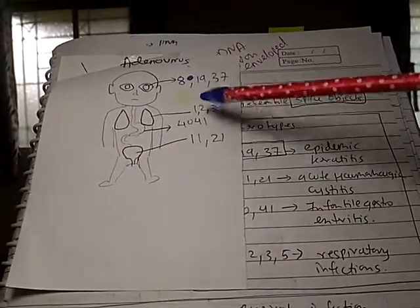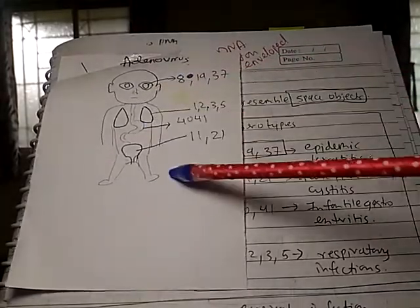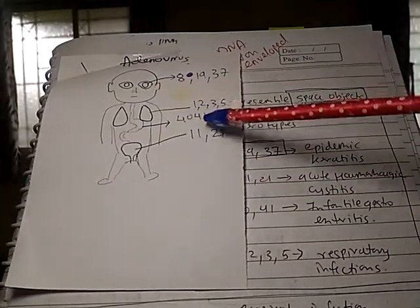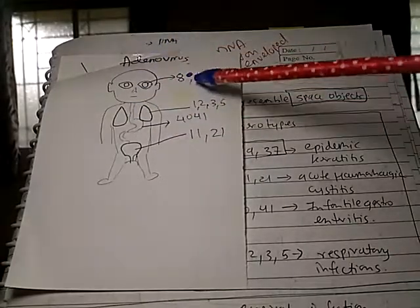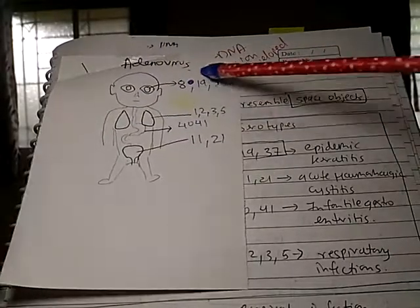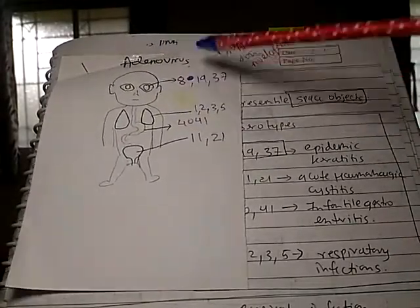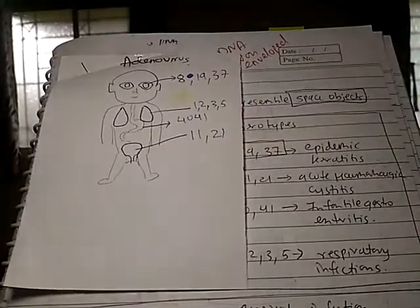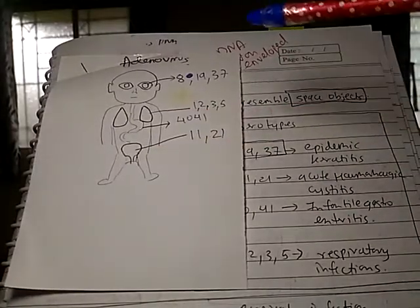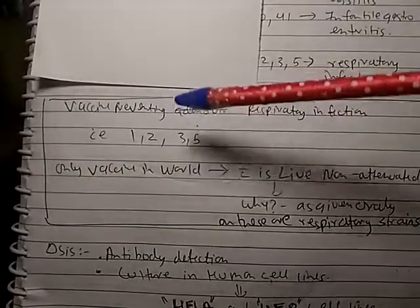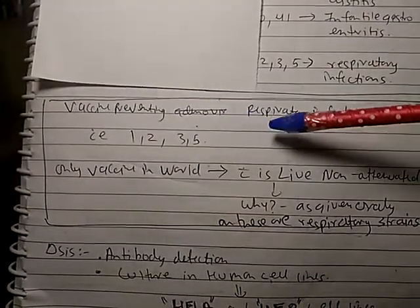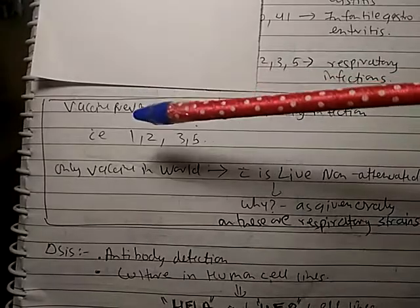Serotypes 1, 2, 3, and 5 — these single-digit numbers — cause respiratory infections, and serotypes 40 and 41 cause infantile gastroenteritis. The most commonly exam-asked are 8, 19, and 37 for epidemic keratitis, and 11 and 21 for hemorrhagic cystitis.